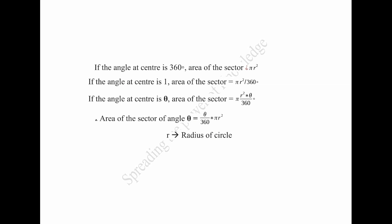When the degree measure of angle at the centre is 1, area of the sector is equal to pi R square divided by 360 degrees. Therefore, when degree measure of angle at the centre is theta, then the area of the sector is equal to theta divided by 360 degrees into pi R square. Here, R is the radius of the circle and theta the angle of the sector in degrees.